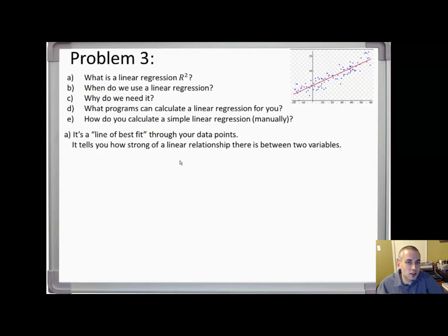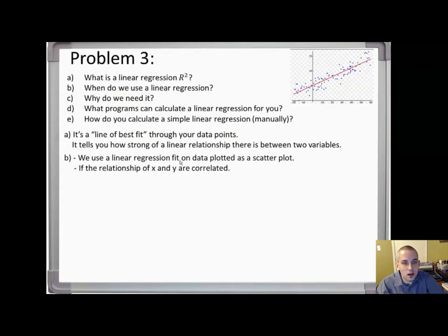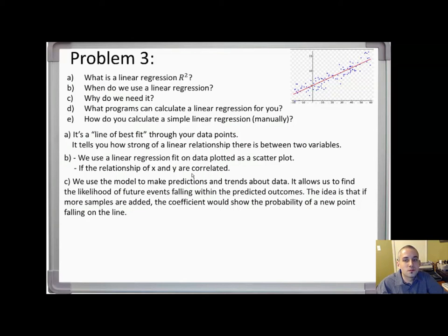When do we use linear regression? We use it on scatter plot data like in this example where there should be a relationship between the x and y values. Why do we need it? Generally, we use this line of best fit to make predictions and identify trends in the data. It also allows us to find the likelihood of future events, and if more samples are added, we can determine the probability of a new point falling on the line.